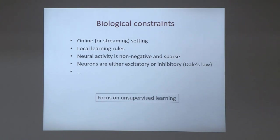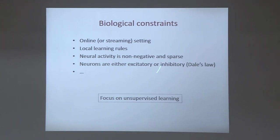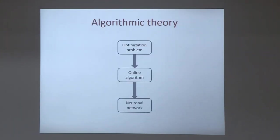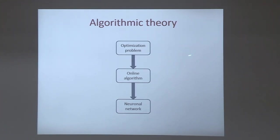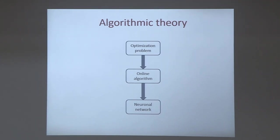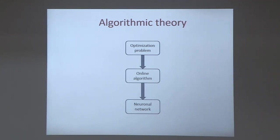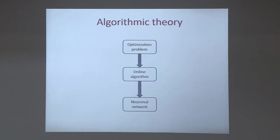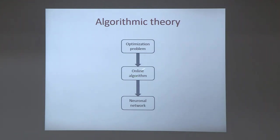What I will try to do today is show how we can construct an algorithmic framework that respects these biological constraints. By an algorithmic theory I mean something akin to a normative approach, as it's called in neuroscience — similar to the framework used in physics and machine learning — where you start by formulating your model in terms of an optimization problem, then derive an online algorithm that solves this problem.